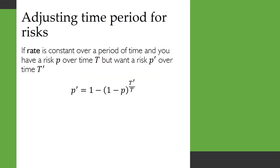If rate is constant over a period of time, and you have a risk p over time t, but want the risk p prime over time t prime, you can calculate p prime as shown here. So p prime is equal to 1 minus (1 minus p) to the power of t prime over t.